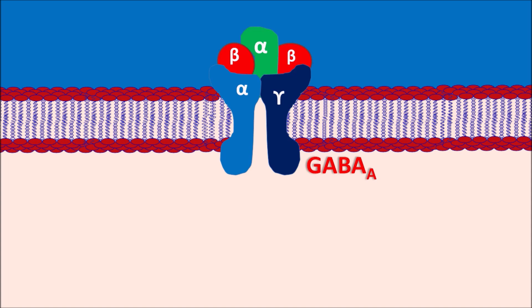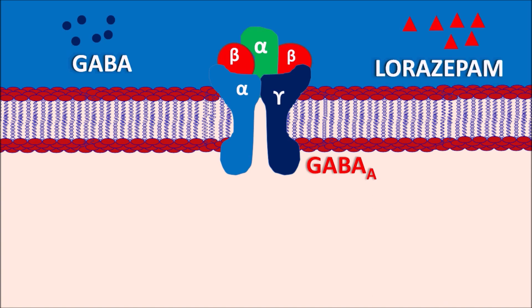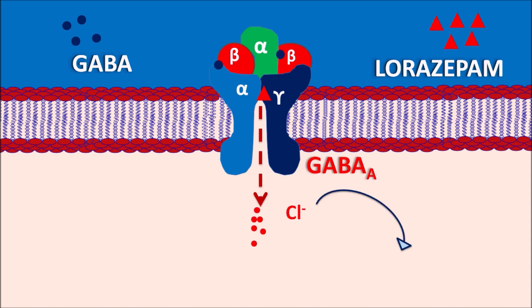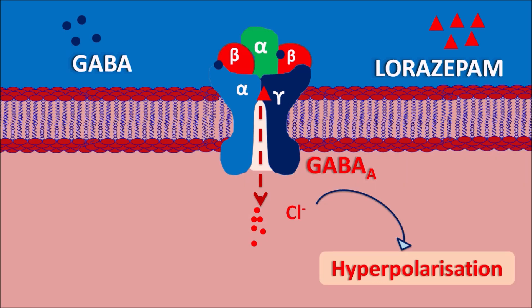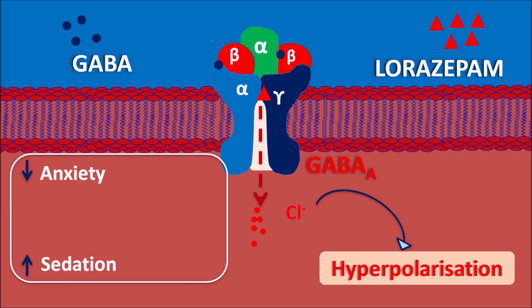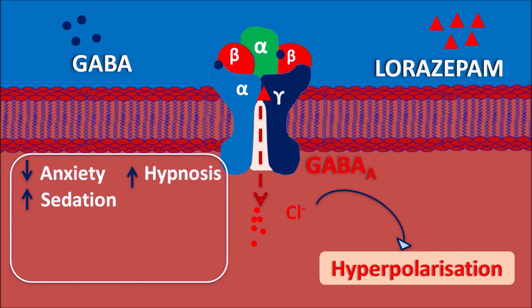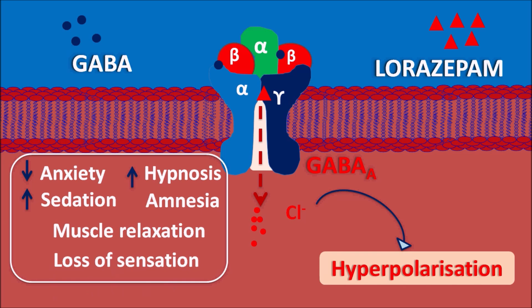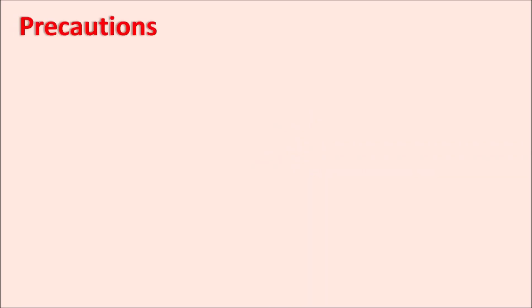GABA-A receptors are made up of five subunits: alpha, beta, and gamma. GABA binds to these receptors, and lorazepam promotes this action by binding to an allosteric site on the GABA-A receptors, enhancing GABA binding between the alpha and beta-gamma subunits. This opens the chloride channels, allowing chloride ions to enter the post-synaptic membrane, producing hyperpolarization — an inhibitory response resulting in decreased anxiety, increased sedation, hypnosis, sleep induction, and amnesia, along with muscle relaxation and loss of sensation.